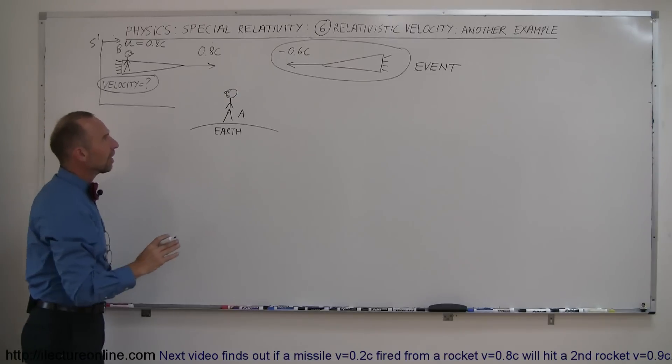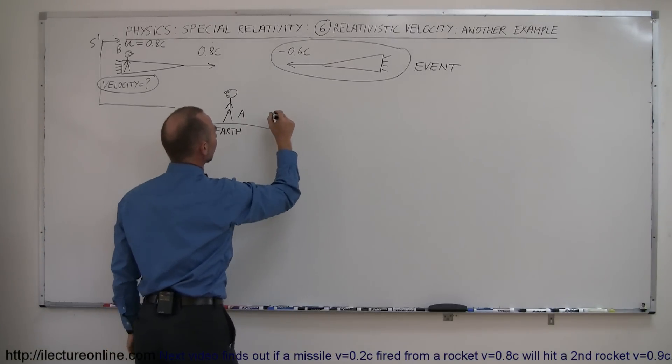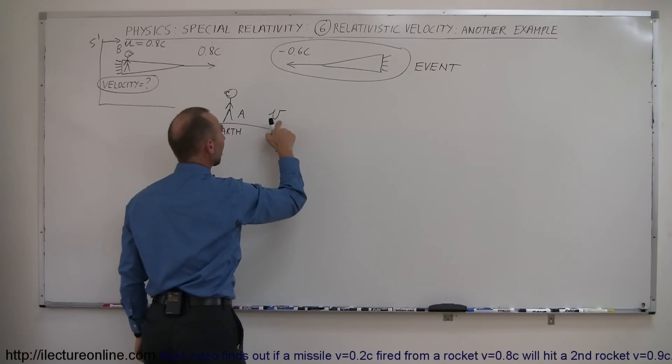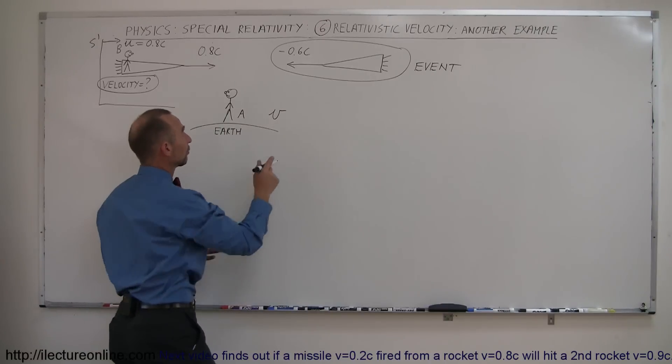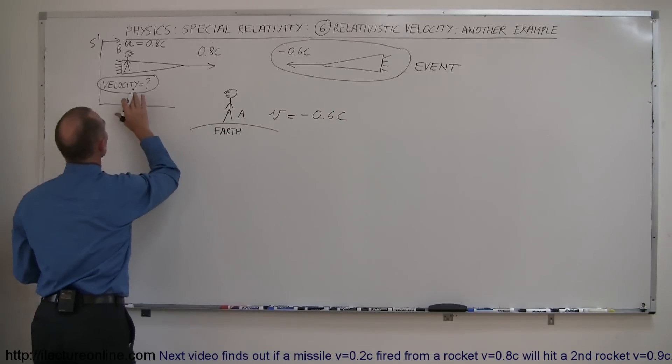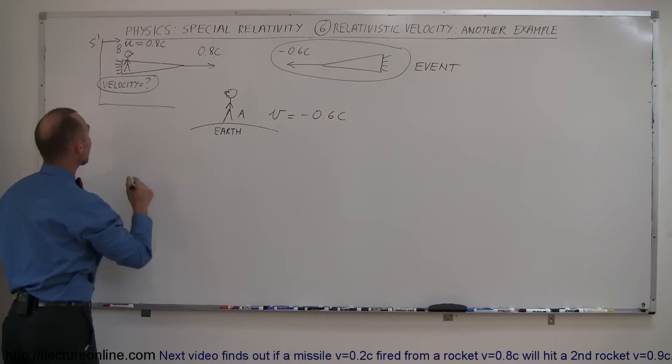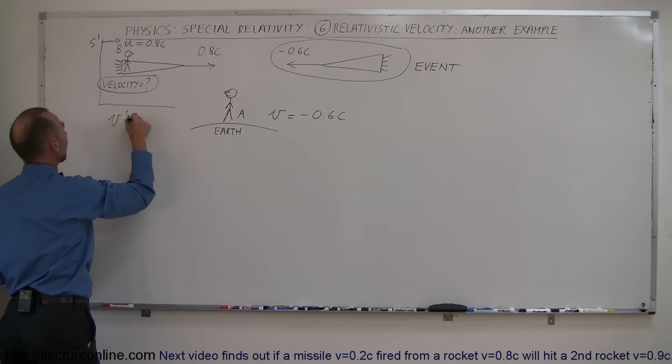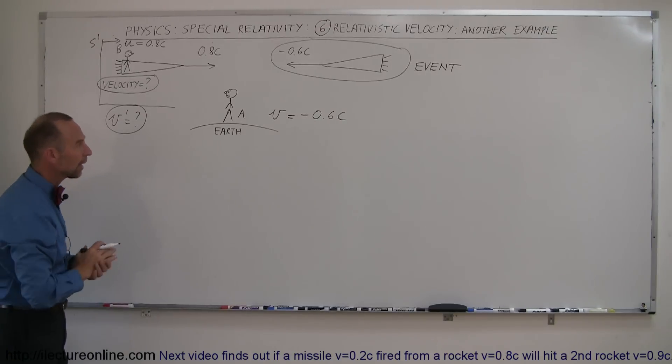Now, the velocity of the event as seen by the observer on the Earth is considered V. So V is the velocity of the event as seen by the stationary observer. And so in this case, V is equal to minus 0.6c. And then what we're looking for, the velocity as seen by the moving observer, that's deemed to be V'. So V' is what we're looking for. That's ultimately the velocity that we're looking for.